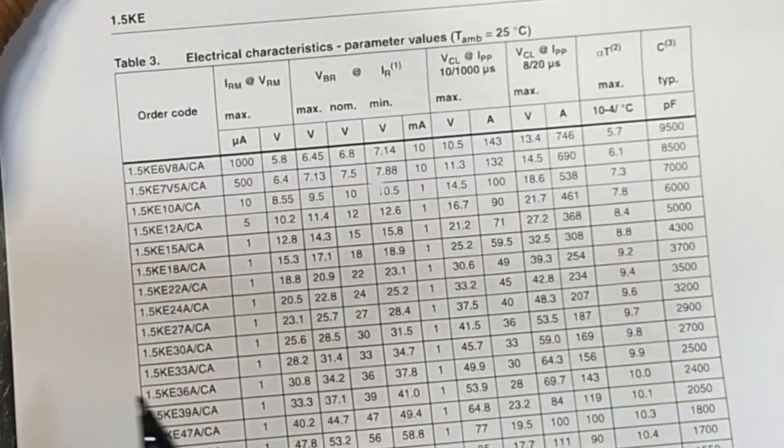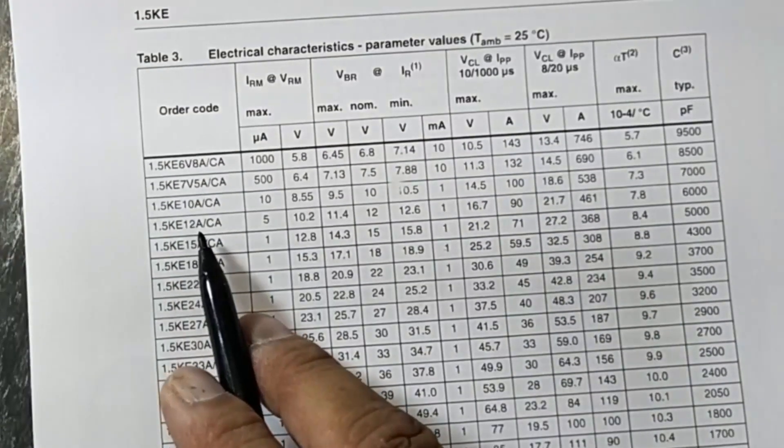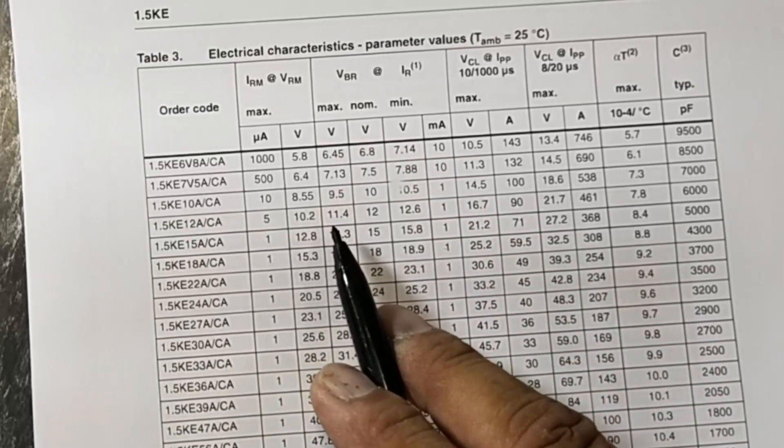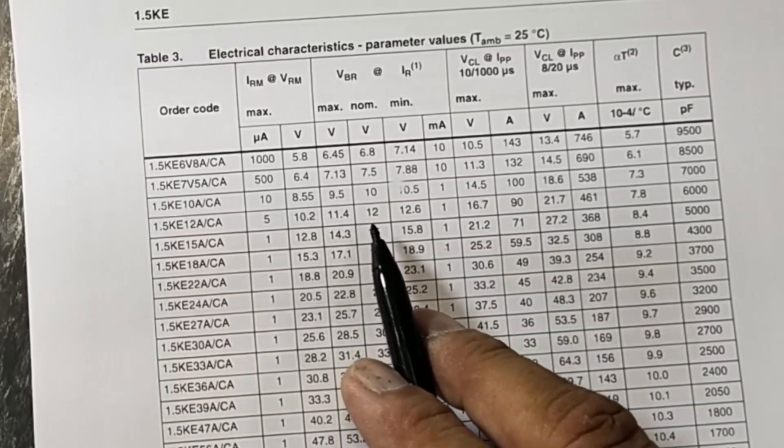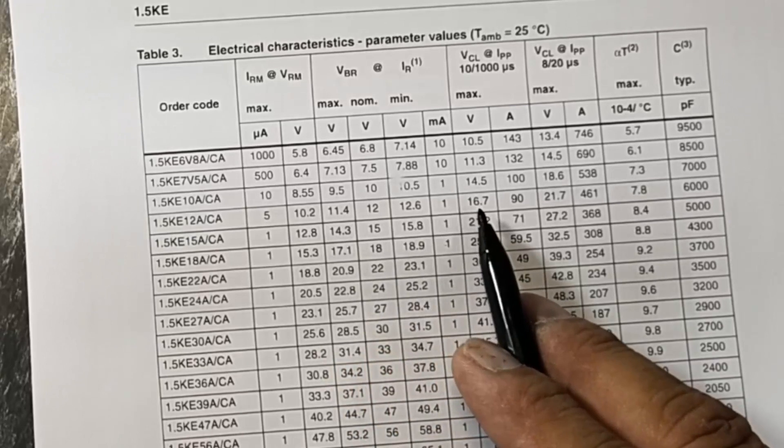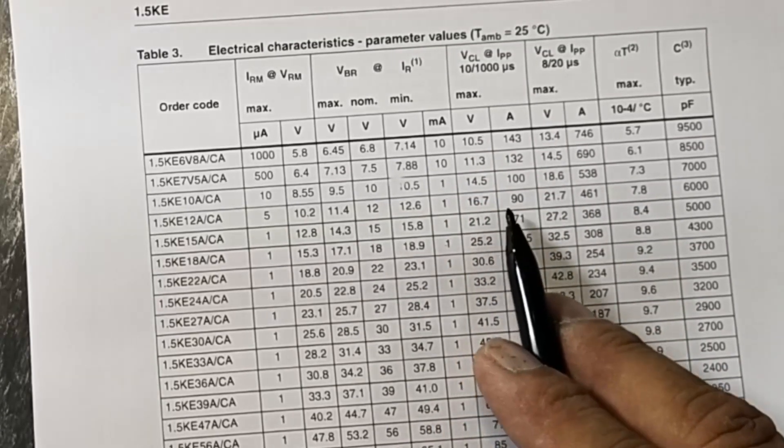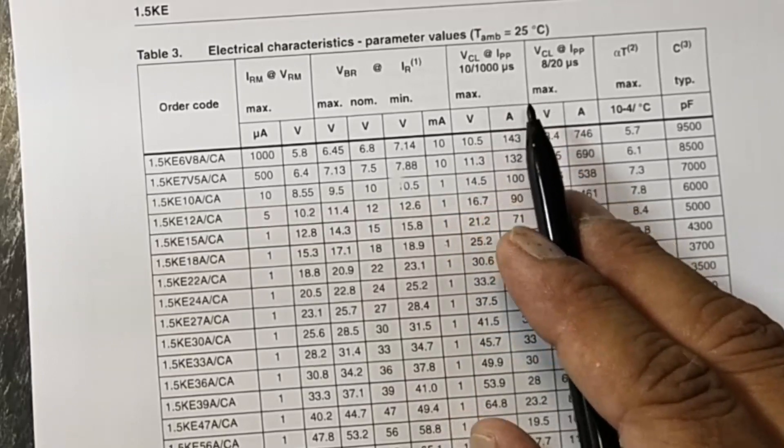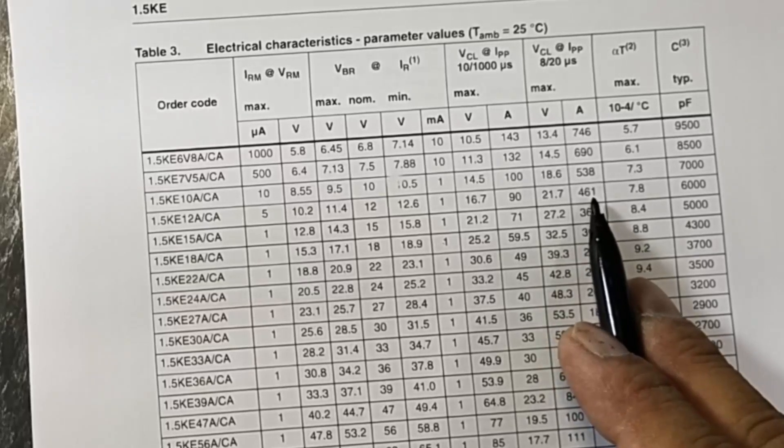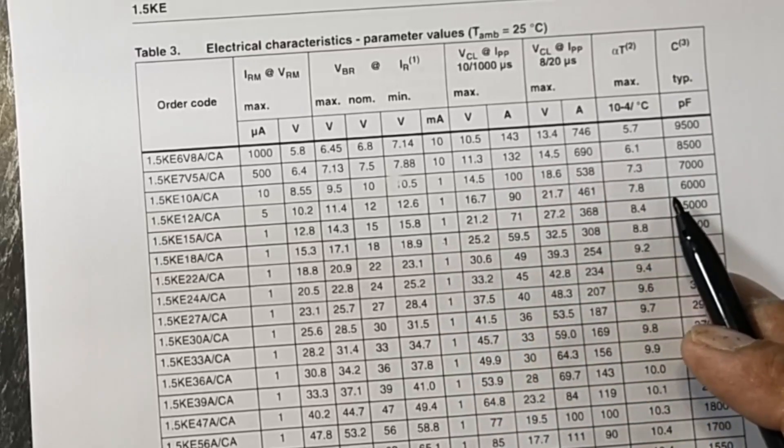At this page we can see the part number. We are discussing here 1.5KE12A and CA. So its breakdown voltage VBR - that is 11.4 volt and nominal 12 volt. So it can regulate 12 volt and it can clamp 16.7 volt at 90 ampere at 10/10,000 microseconds. For 8/20 microseconds, 21.7 volt at 461 ampere. So it is time to ampere and voltage ratio. And maximum temperature...